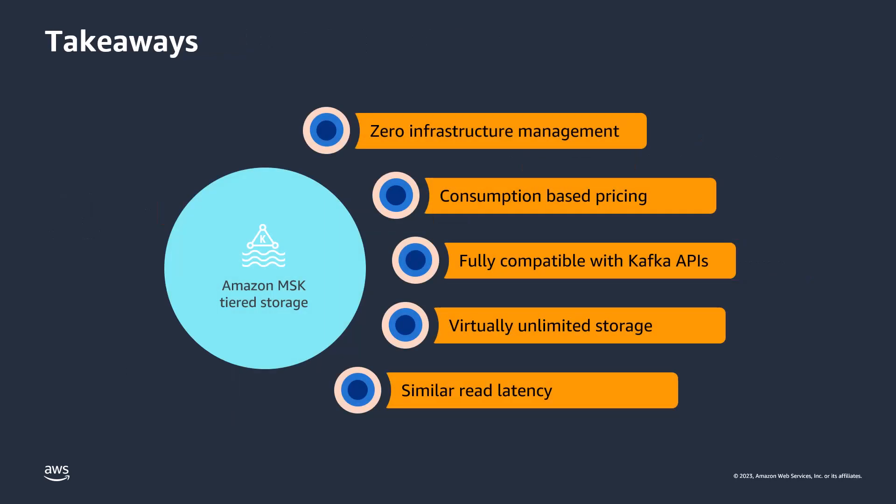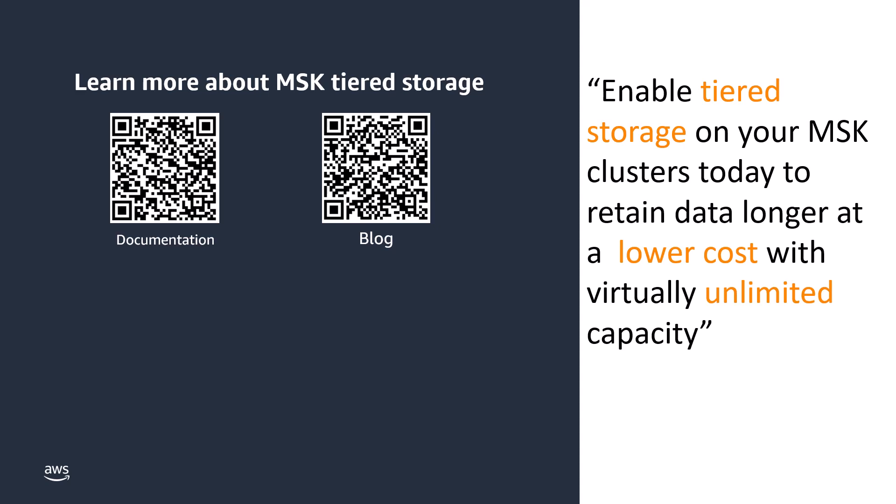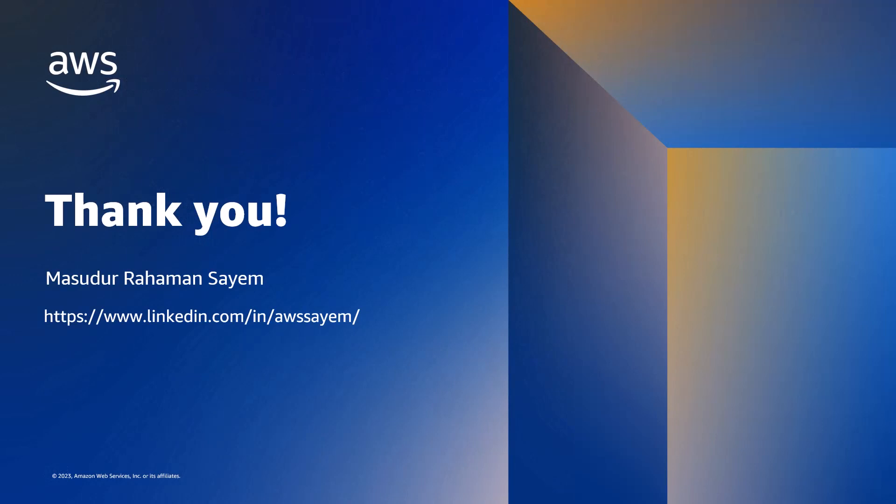In summary, with MSK Tiered Storage there is zero infrastructure management. You get virtually unlimited storage, and the feature is fully compatible with the Apache Kafka consumer API, Streams API, and connectors. It provides similar read latency when reading from tier storage. In terms of cost, you pay for the amount of data you store and the amount you retrieve. This feature is compatible with the API introduced in KIP-405. Thank you all for your attention — I hope you found the talk informative and valuable. If you have any questions, comments, or feedback, please reach out to us.